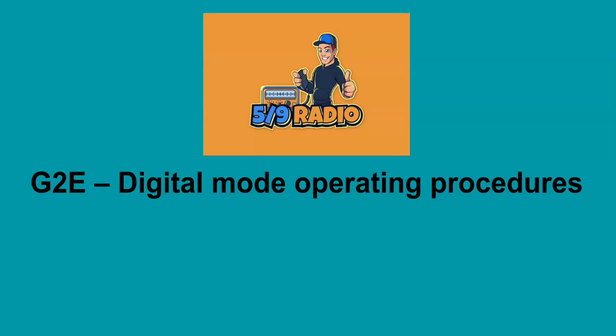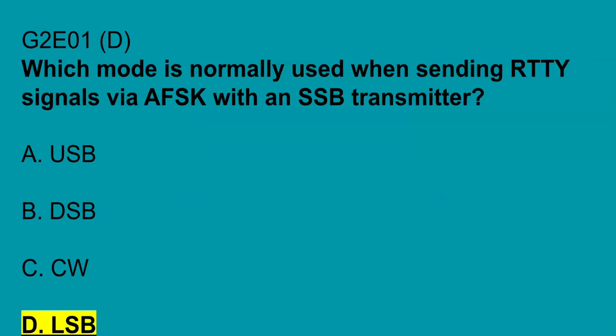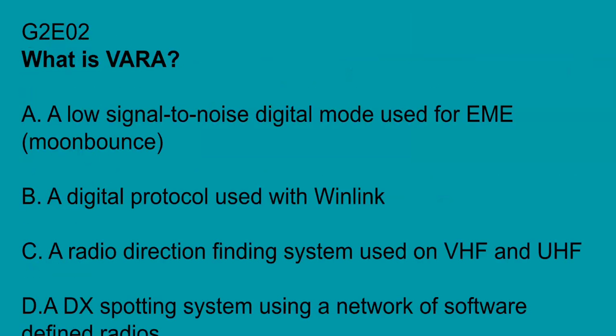Starting today with G2E, Digital Mode Operating Procedures. G2E01 asks: which mode is normally used when sending RTTY signals via AFSK with a single sideband transmitter? The answer is lower sideband, LSB.